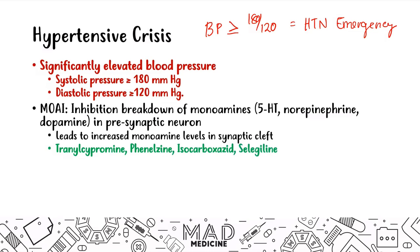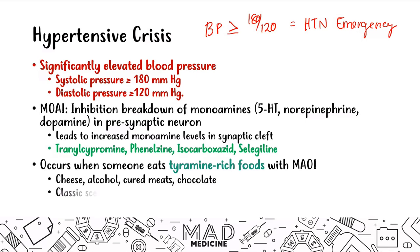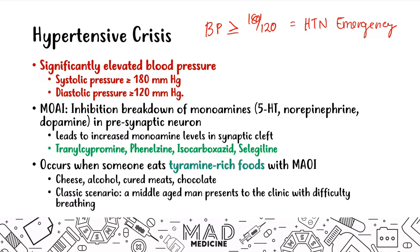If you give someone an MAOI, they won't instantly go into hypertensive crisis on their own. There has to be a secondary predisposing event: when someone eats tyramine-rich foods while taking an MAOI. These tyramine-rich foods include cheese, alcohol, cured meats, and chocolate. When someone on an MAOI eats these foods, they can go into hypertensive crisis.